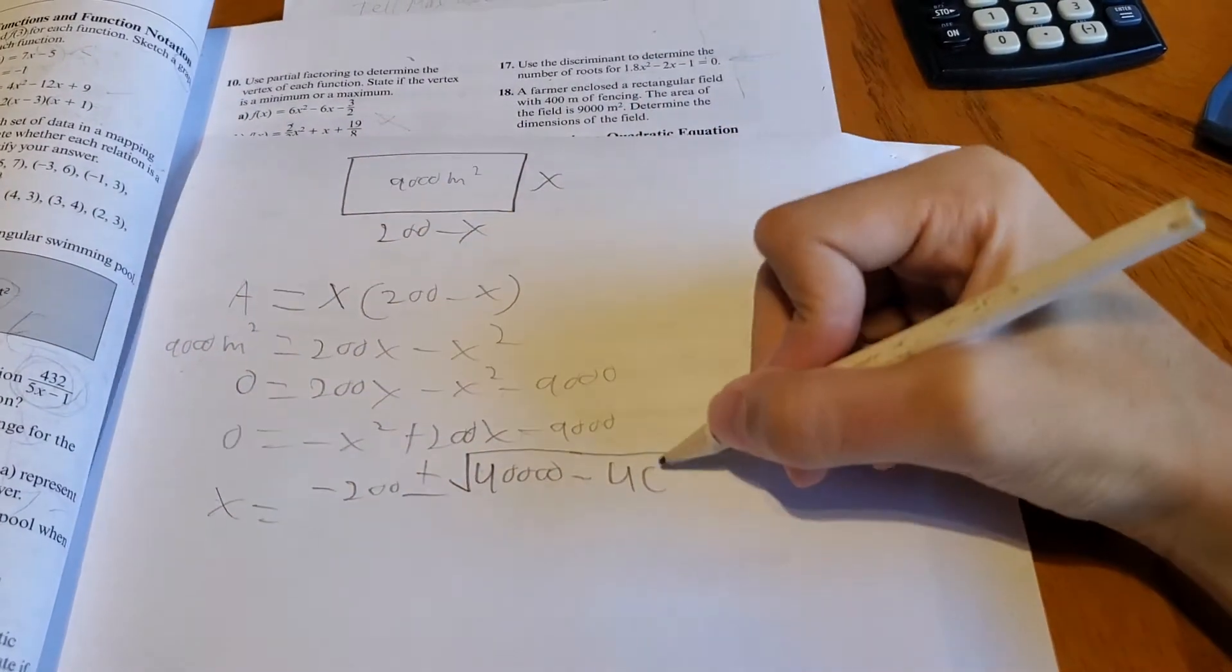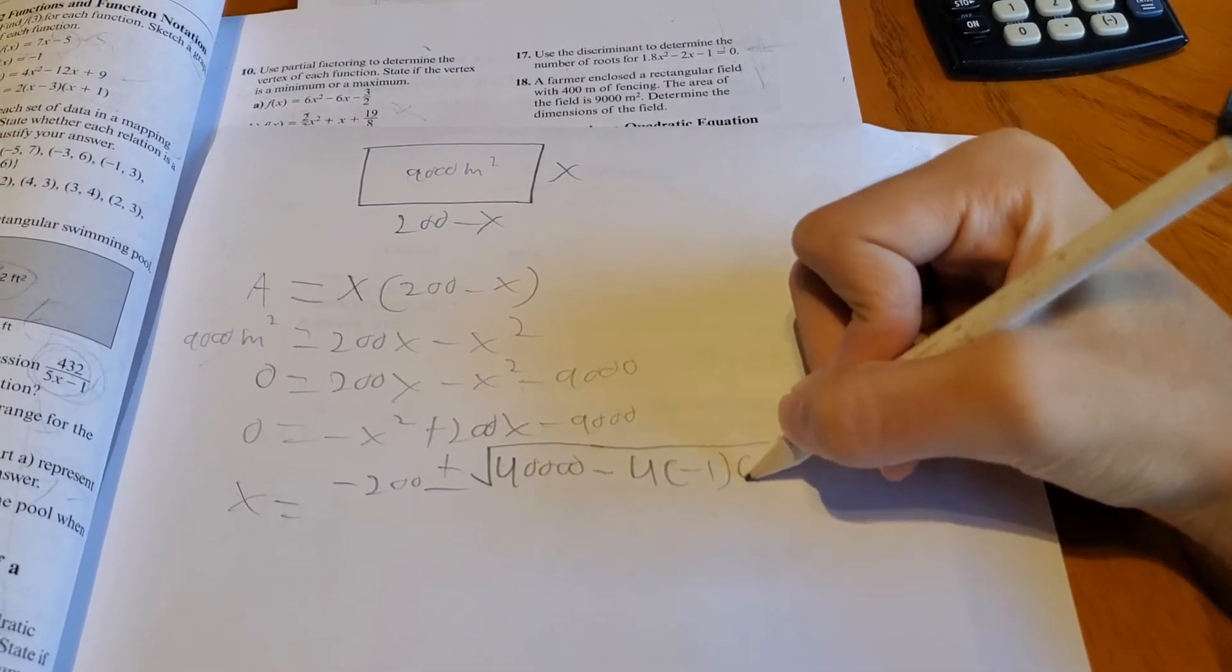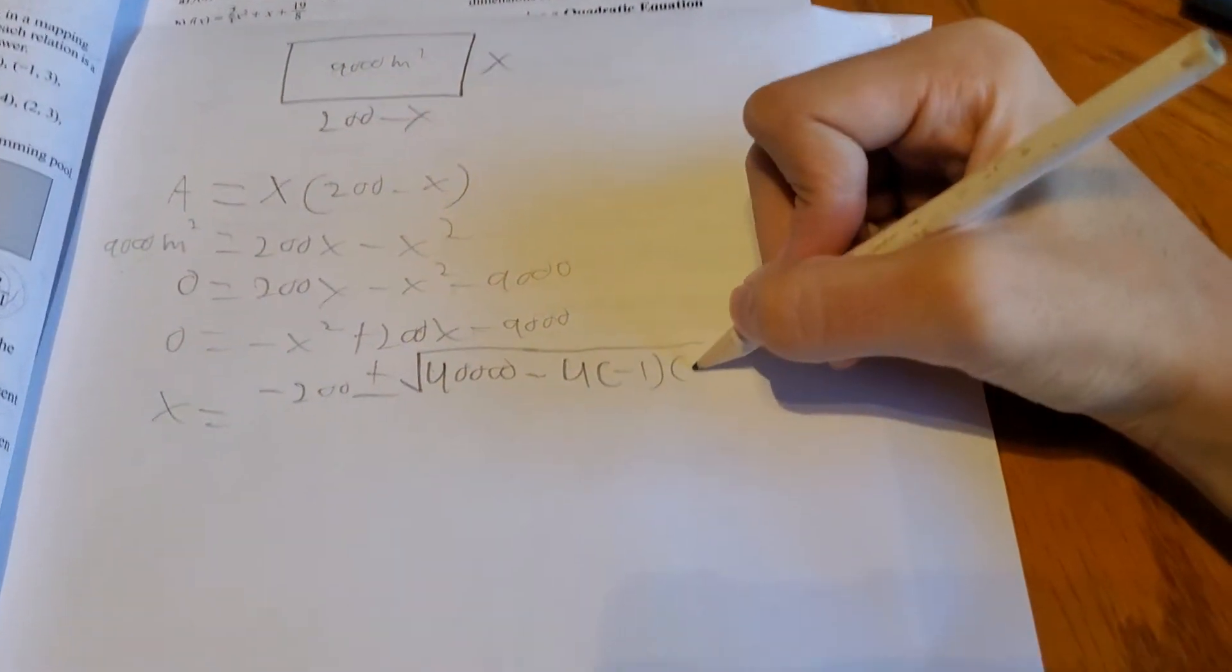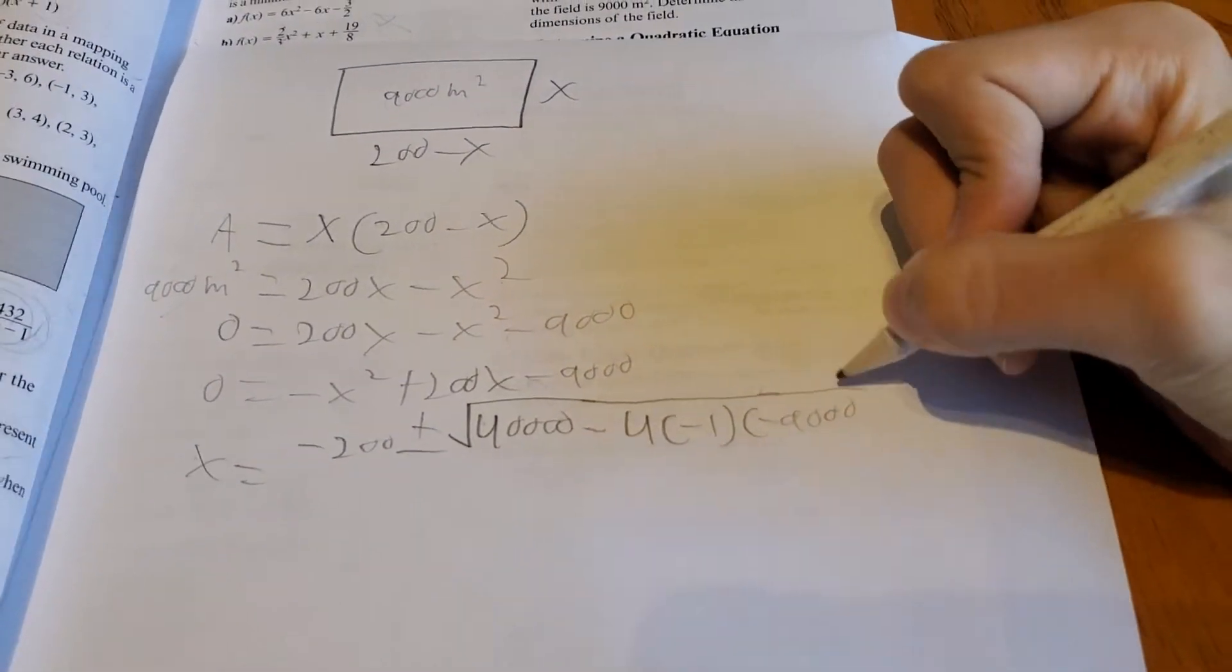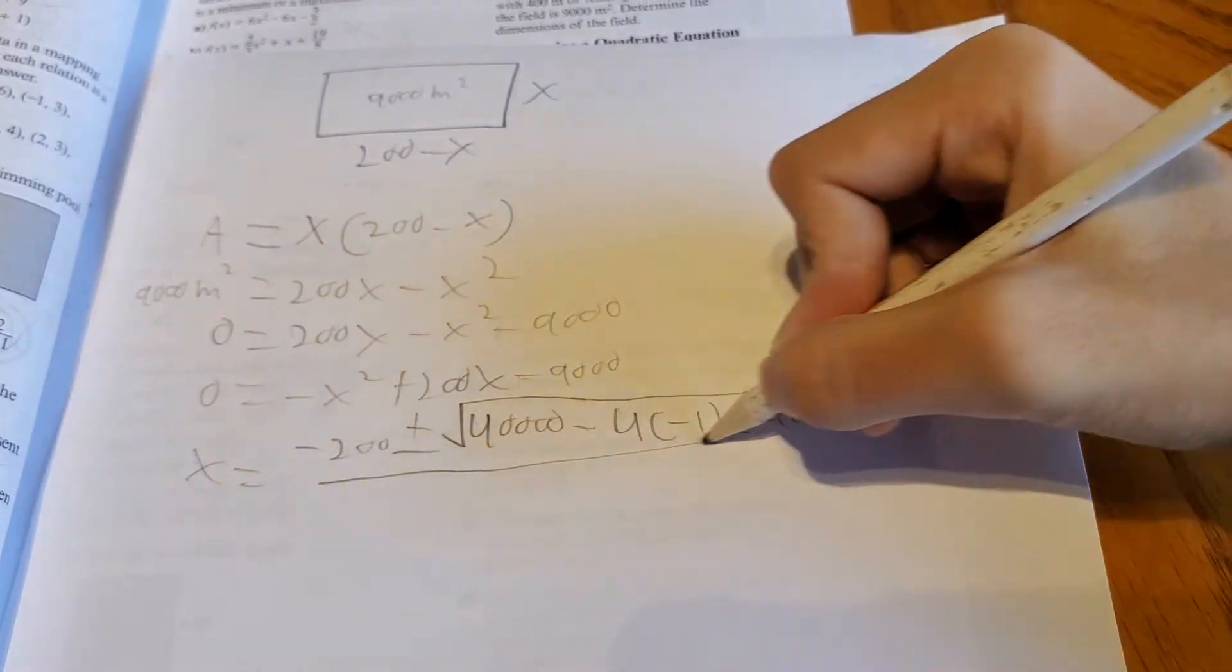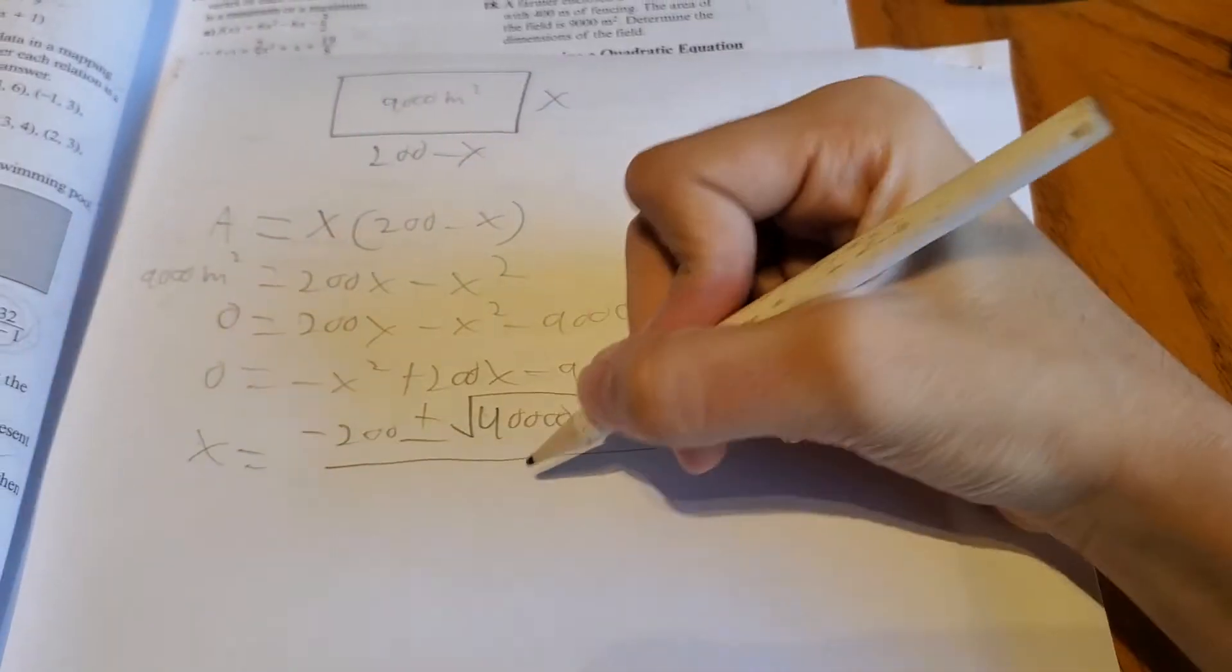Times a, which is negative 1, times c, which is negative 9,000, over 2a, which is negative 2.